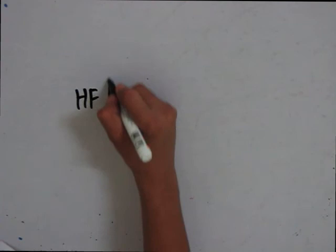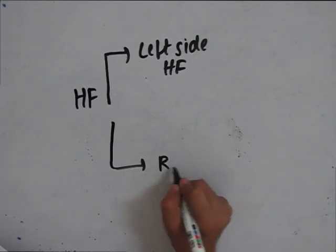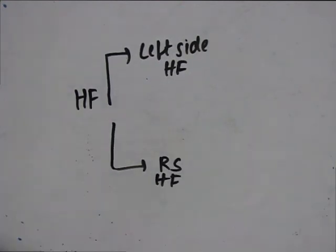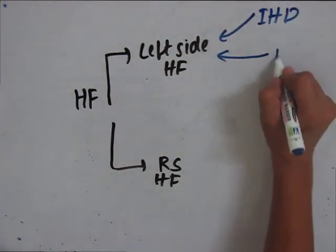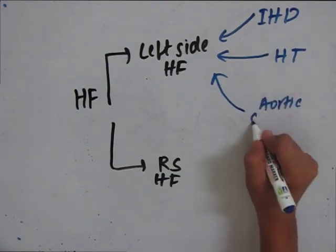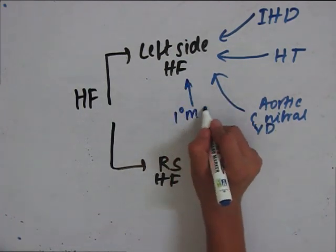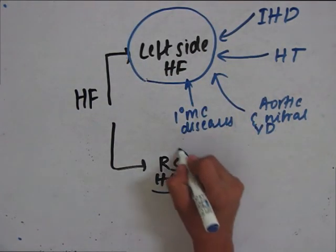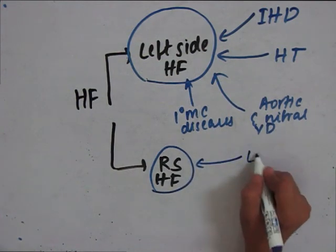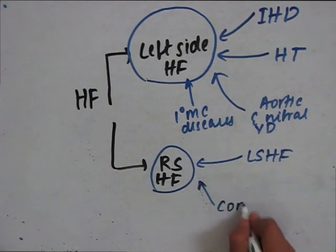Heart failure is usually either left-sided or right-sided. The common causes of left-sided heart failure are ischemic heart disease, hypertension, aortic and mitral valve diseases, or primary myocardial diseases. Left-sided heart failure is usually the most common one. The most common cause of right-sided heart failure is left-sided heart failure. The other important cause of right-sided heart failure is cor pulmonale.